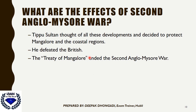The effect of the Second Anglo-Mysore War: Tipu Sultan learned of these developments and decided to protect Mangaluru and coastal regions. He defeated the British. The Second Anglo-Mysore War ended with the Treaty of Mangaluru, wherein Tipu Sultan safeguarded the region of Mangaluru.